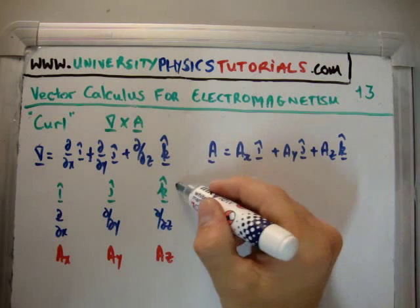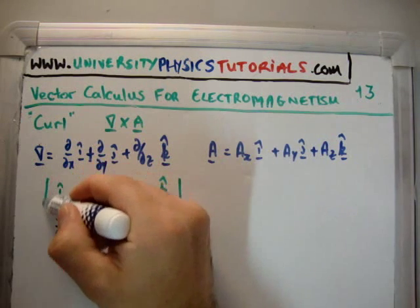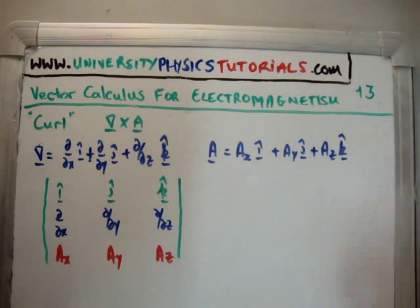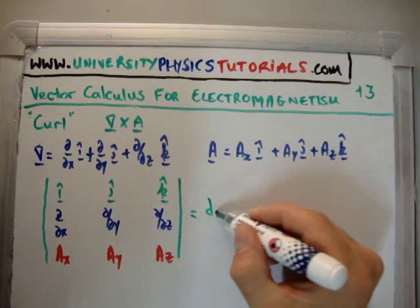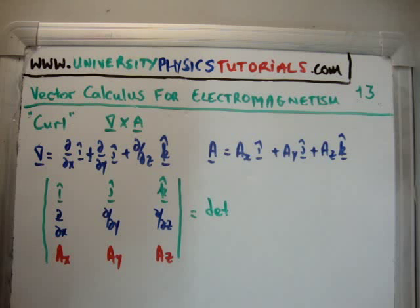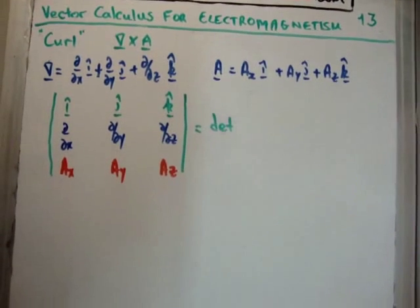The components in the i hat direction is del/del x, the component in the j hat direction is del/del y, and the component in the k hat direction is del/del z. Then we write down the second one which is going to be A_x in the i hat, A_y in the j hat, and A_z in the k hat direction. To get the cross product here you take the determinant of this 3 by 3 matrix.